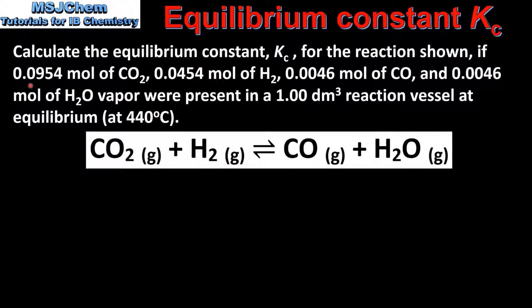In this example we are given the amount in moles of each reactant and product present at equilibrium. We have 0.095 moles of carbon dioxide, 0.045 moles of hydrogen, and 0.0046 moles of carbon monoxide and water vapor.